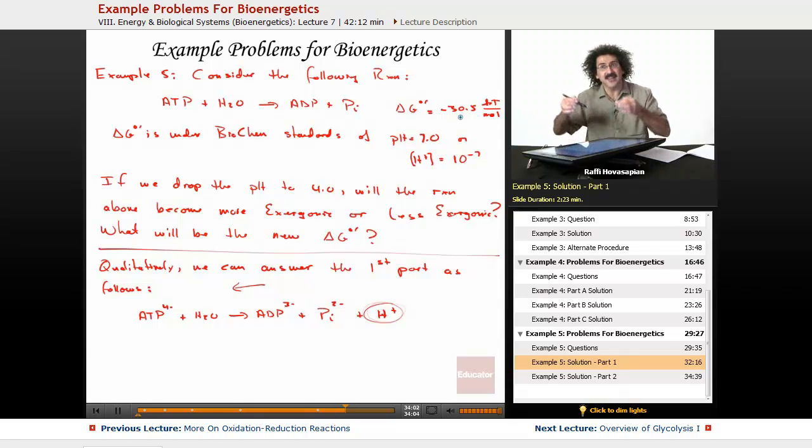It's actually going to become less exergonic. There's going to be less free energy available. This negative 30.5 is going to get less negative. It's going to go up to maybe negative 20, negative 15, negative 10. That's what happens. So it's good to know exactly what is going on in a particular reaction. In general, we don't concern ourselves with stuff like that, but it's a great idea to understand the details.